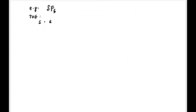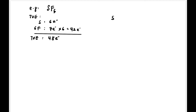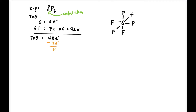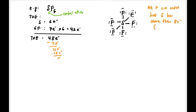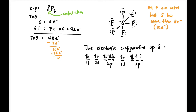For example, SF6: S is the central atom with 6 valence electrons, F has 7 × 6 = 42, total = 48. We make 6 bonds using 12 electrons, leaving 36 placed on the F atoms — all F atoms are octet. But S has 12 electrons around it, giving it an expanded octet.